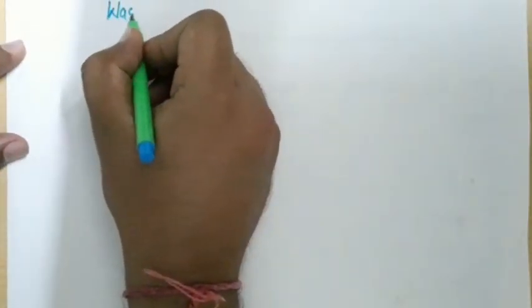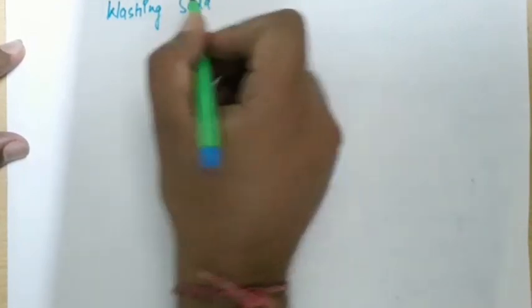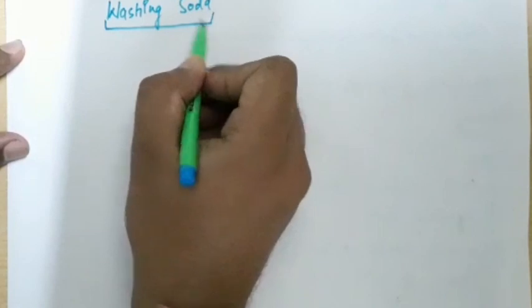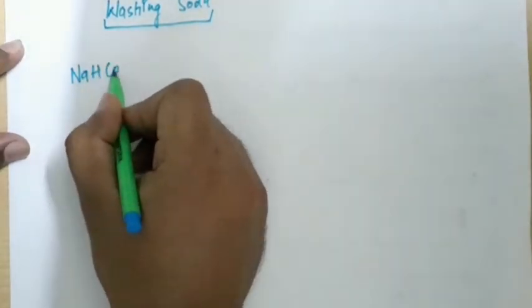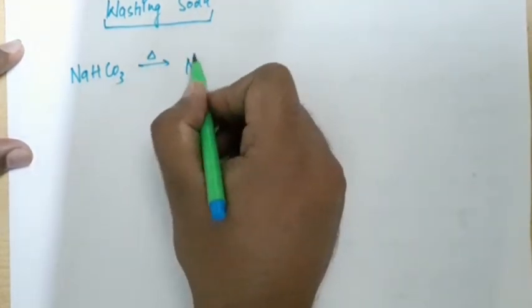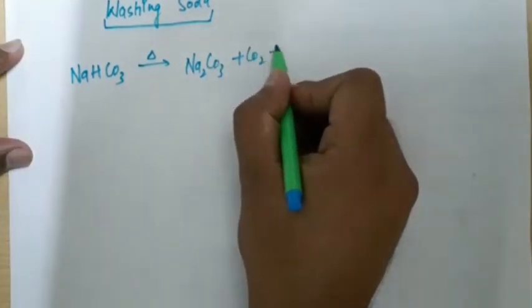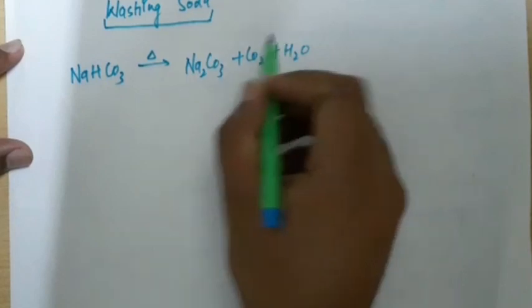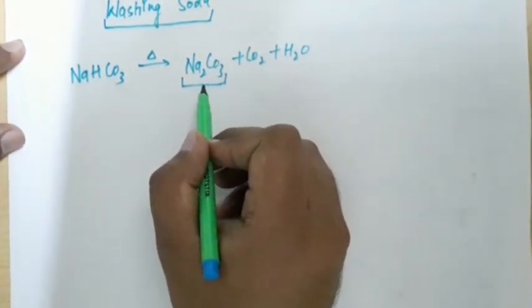Now washing soda. When baking soda that is NaHCO3 is heated strongly, then we see sodium carbonate is formed with CO2 plus H2O. Here this sodium carbonate is very essentially used in the formation of washing soda.